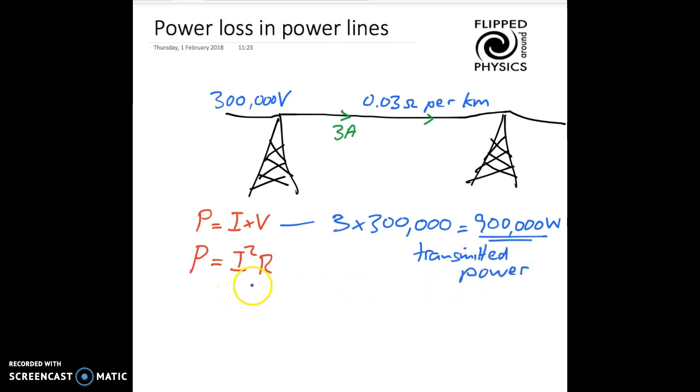The other formula concerns the power wasted. So the power loss due to heating of the wire. They may, for example, tell you that the wire has a certain resistance. So in this case, I put 0.03 ohms for every kilometre. So let's say we have 10 kilometres of wire. And let's work out the power loss in a 10 kilometre wire.